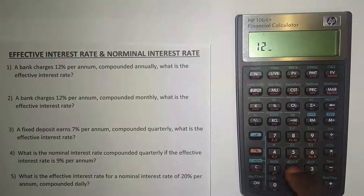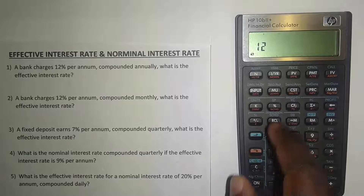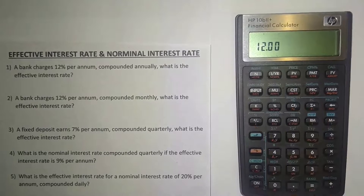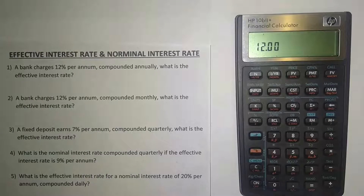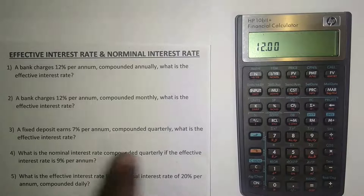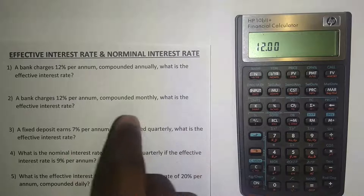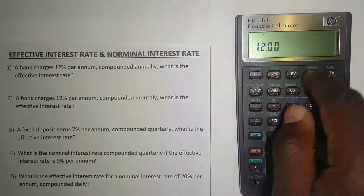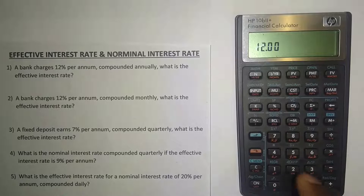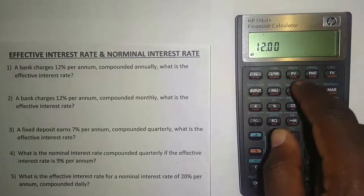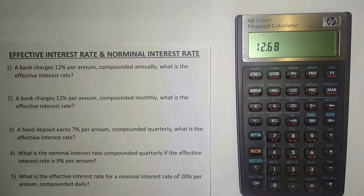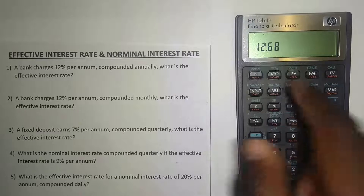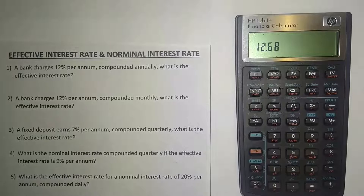We need to put in the 12% nominal interest rate: press 12, the orange button, then I/YR. Then put in the number of compoundings per year — it's compounded monthly so that's 12 compoundings per year. Press 12, then the orange button, then PMT. Then press the orange button and press PV to calculate the effective interest rate. The effective interest rate is 12.68%.